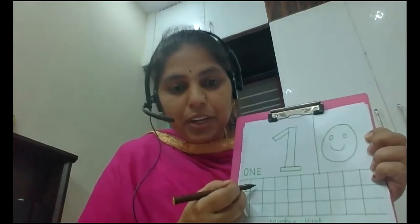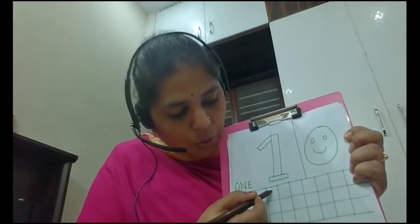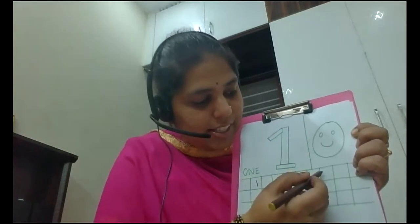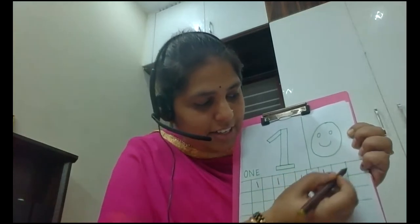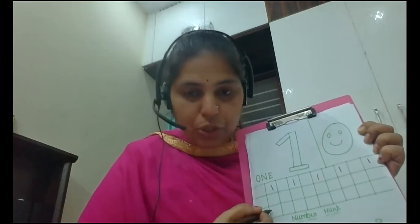Please instruct the younger kids — tell them to write one in the box, then leave one box and tell them to write one again. Dear children, you say and write okay — say one and write one, and leave a box. Kids can write easily — say and write like this: one, one, one.